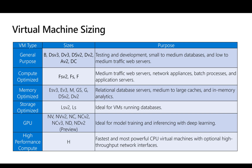Coming to the next family type — compute optimized VMs — we have F series and FS series available. Compute optimized VMs normally have a higher CPU-to-RAM ratio, so we can use them for applications which need more computation. Normally we use compute optimized series for medium-traffic web servers, network appliances like firewalls, batch processing, and application servers.